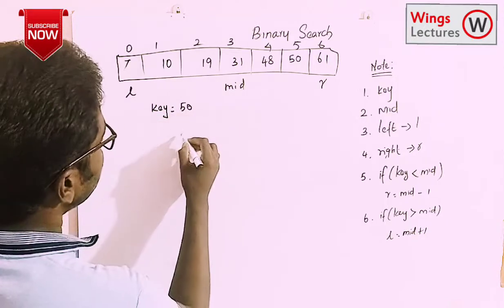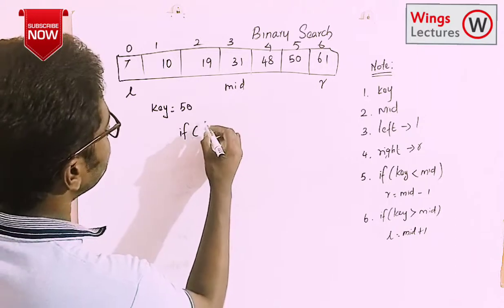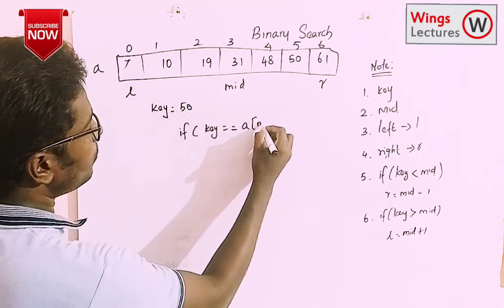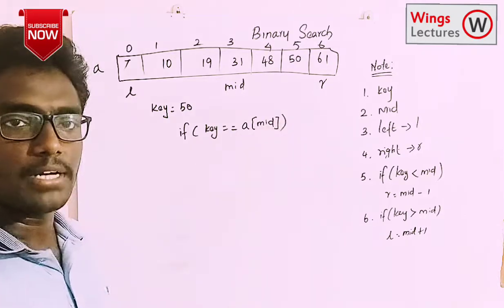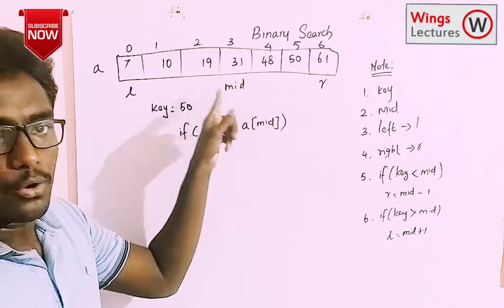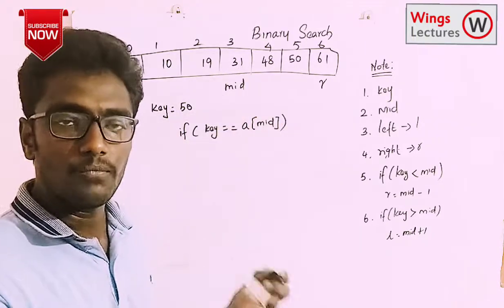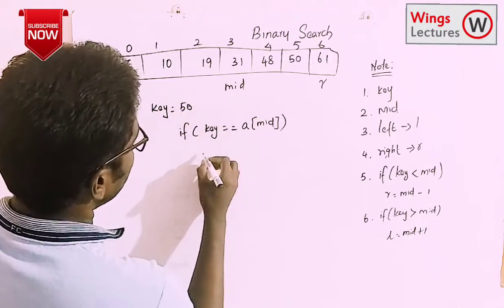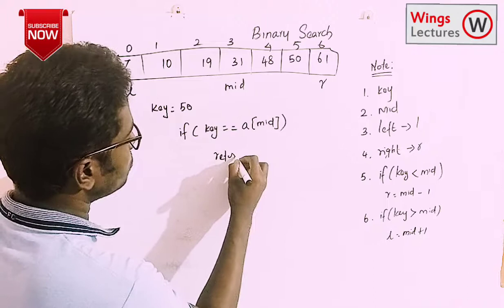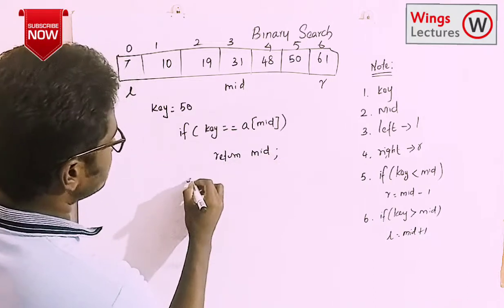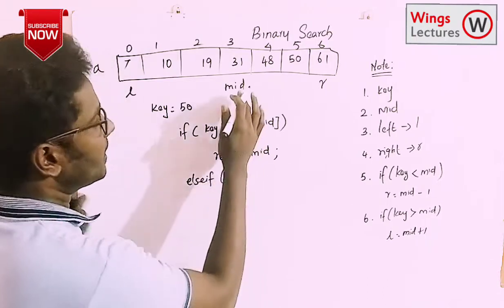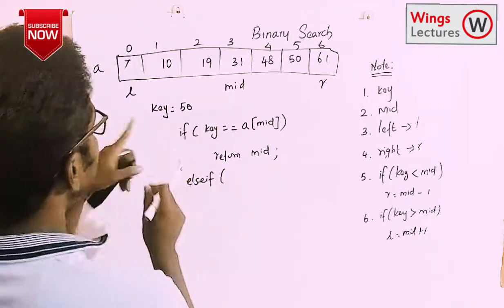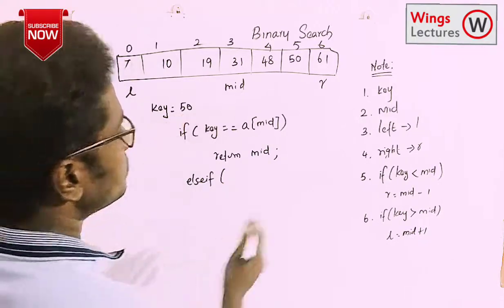The first condition is: if key equals array[mid], meaning if on the very first step we get the location — for example, if 50 is at mid — we can find the data right away. If it is satisfied, we print the mid value and return. Otherwise, if it is not equal, it must be either less than or greater than.